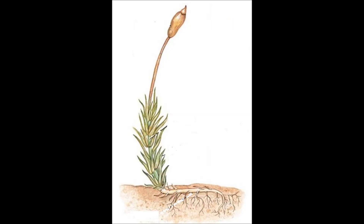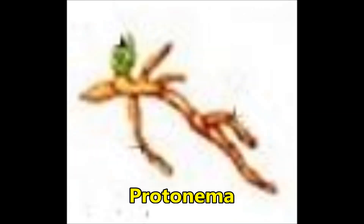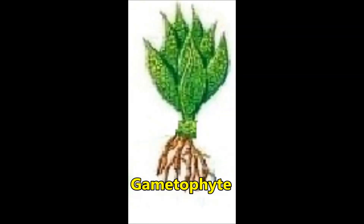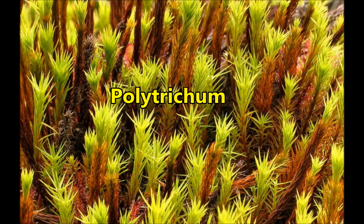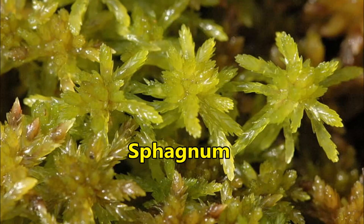The foot anchors the gametophyte and helps to transfer water and nutrients from the gametophyte. The seta is a long, erect stalk. The capsule produces spores, which are formed after meiosis. When spores fall onto the ground, they germinate into a branching, thread-like filamentous protonema. Buds from the protonema grow into leafy male or female gametophytes. Examples include Funaria, Polytrichum and Sphagnum.